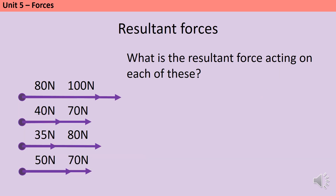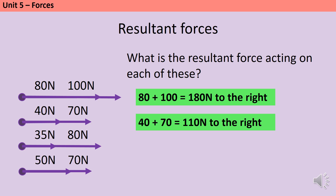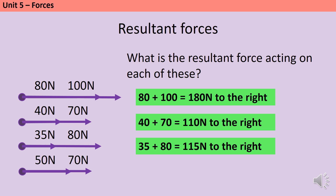Here are four more examples for you to find the resultant force for — pause the video and write down an answer for each one. An 80 newton force and a 100 newton force together make a resultant force of 180 newtons to the right. 40 and 70 newtons would be 110 newtons to the right. 35 and 80 newtons would be 115 newtons to the right. And 50 and 70 newtons would be 120 newtons to the right.